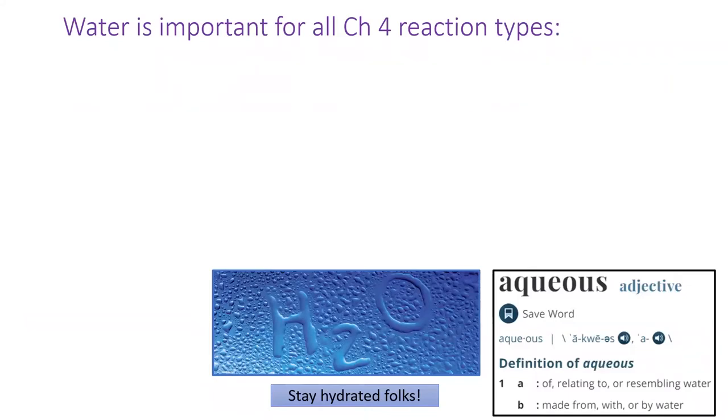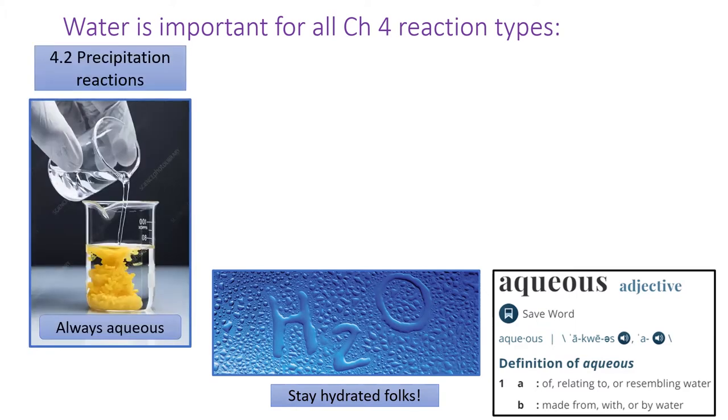The following sections of Chapter 4 will explore three different kinds of reactions, most of which are solution-based. Precipitation reactions occur when two solutions are mixed and a solid product appears. These reactions are always in aqueous solution.